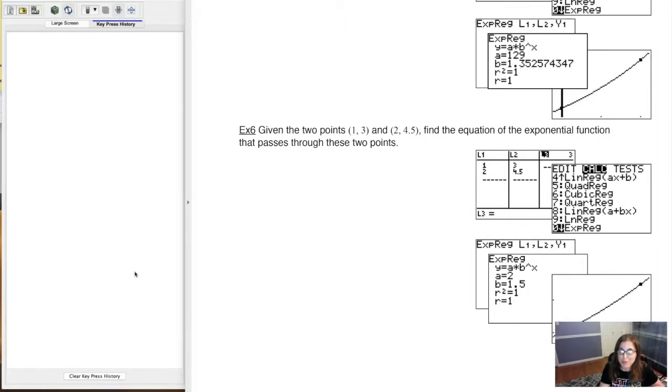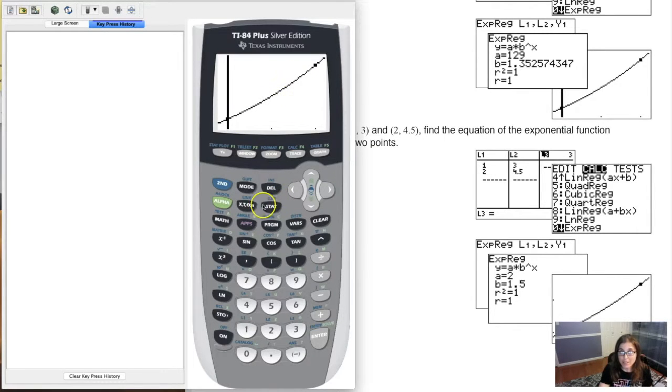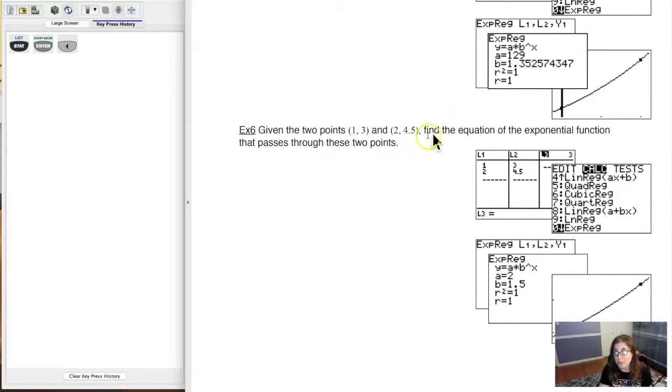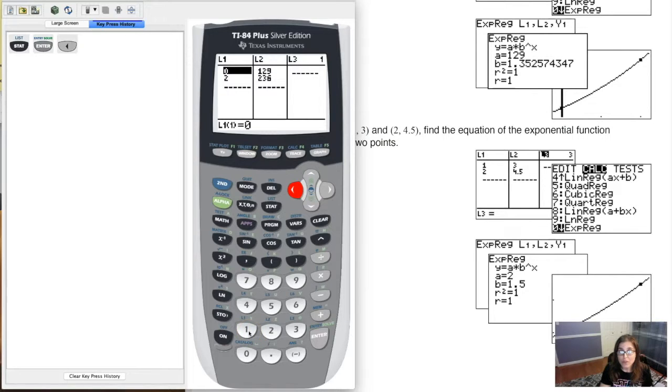Hey, Math 31. We're back with example six, doing it via calculator. We just did it by hand. It was a little bit more annoying to do than example five. So let me show you how to do it via your calculator. Same game plan as example five. So here was our last exponential model. I'm going to go into my lists and overwrite what was in there. This was the wolf population data. Our two ordered pairs were (1, 3) and (2, 4.5). So let me do 1 and 2 for my x values.